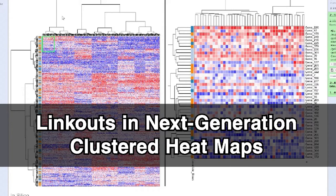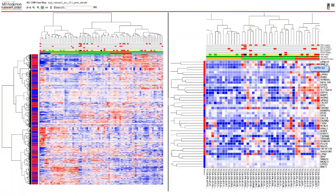In this video, we will be going over link outs in next generation clustered heat maps. Link outs are associated with either row or column labels, and in this video we are showing a heat map using samples and genes as labels. A key feature of the NGCHM system is that you can easily link out the information related to the data in the heat map.